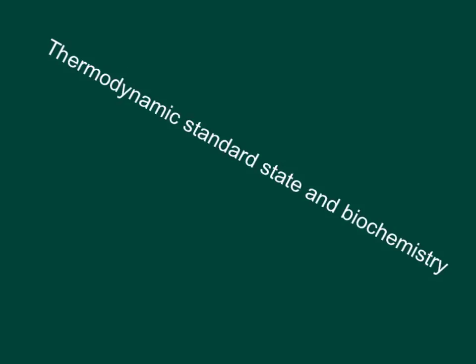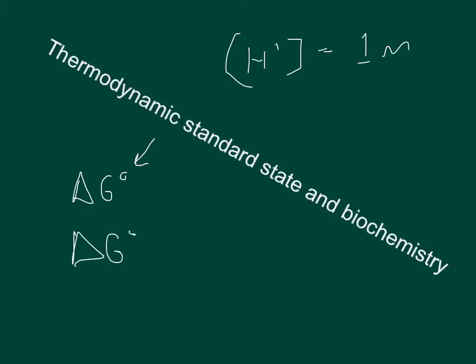In thermodynamics, when calculating delta G, you have a standard state designated as delta G naught. When that's calculated, the concentration of hydrogen — whenever it's consumed or produced — is equal to one molar. In biochemistry, it is never going to be one molar, so the standard state has been redefined for biochemistry, designated as delta G naught prime, with a prime sign by the naught.